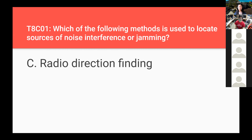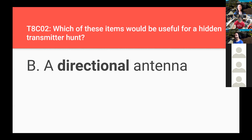Radio direction finding is really interesting — if someone is causing interference to a licensed service, the FCC has very nice directional antennas and they will find you. Don't mess with the FCC. Which of these items would be useful for a hidden transmitter hunt? A directional antenna. A Yagi antenna — Y-A-G-I — is a directional antenna used for transmitter hunts; it's made of PVC and measuring tape, plug in a cable to a radio, and you can locate hidden transmitters.